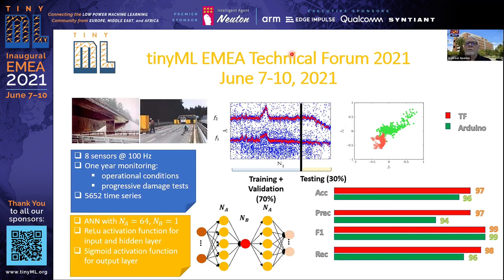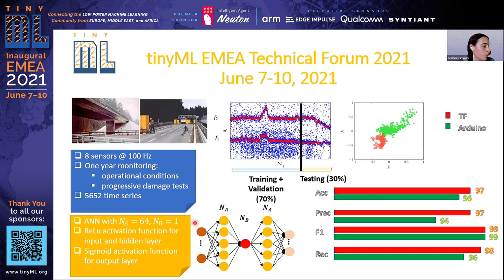Thank you, Federica — great talk on structural monitoring. There is a question from the chat about the specific neural network architecture used for the task — is it an MLP? It is a simple ANN with three input neurons, corresponding to two frequencies and one environmental effect — in this case temperature. There is one hidden layer with 64 neurons, one bottleneck neuron, and a final layer with 64 neurons leading to two output layers with a sigmoid function.